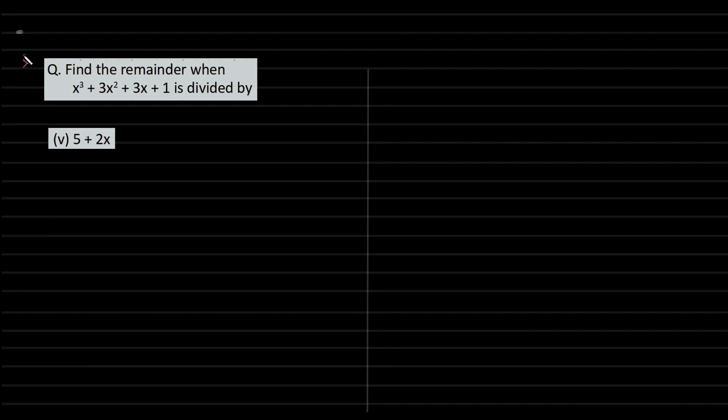Find the remainder when this expression is divided by 5 + 2x. First, we need to write things in standard form. 5 + 2x is not in standard form; we need to write it as 2x + 5. The numerator is already in standard form, so it's copied as is. Always express in standard form.